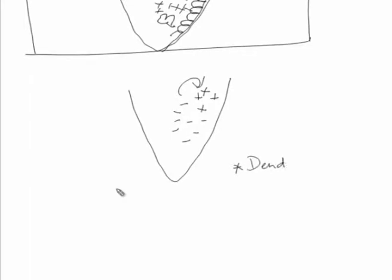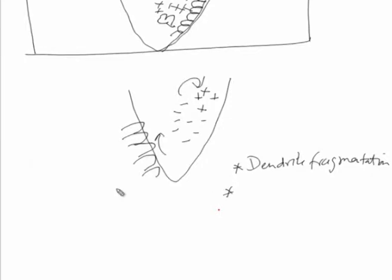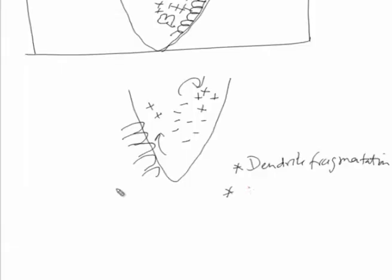Dendrite fragmentation is one mechanism. The second mechanism is grain detachment, in which the dendrite or grain detachment takes place. We know that the weld metal will have partially melted grains, and these partially melted grains are broken under the movement of the liquid metal in the weld pool. These partially melted grains, when broken, provide fragments that are able to act as nucleants. When present in large amounts, they are able to refine the grain structure. So grain detachment is another mechanism which helps in refining the grain structure.